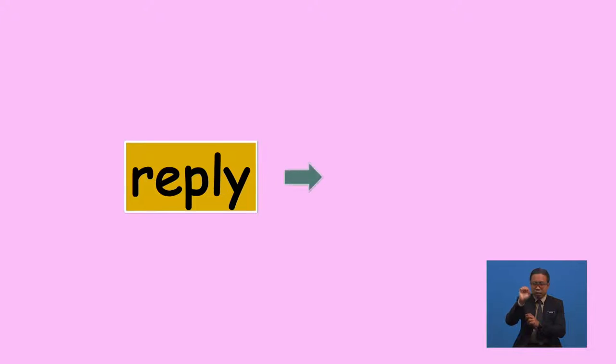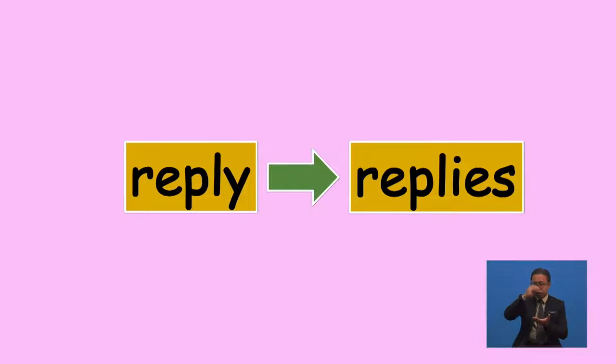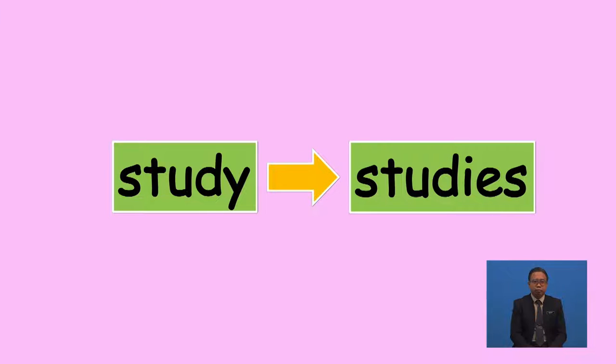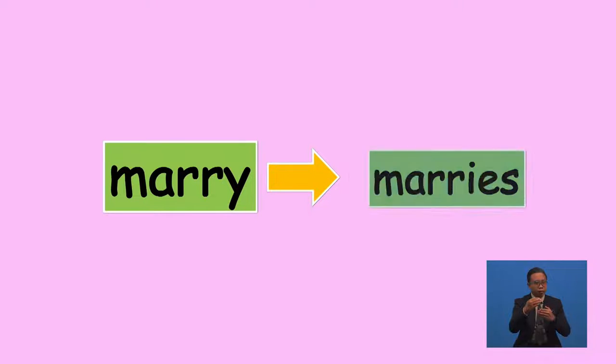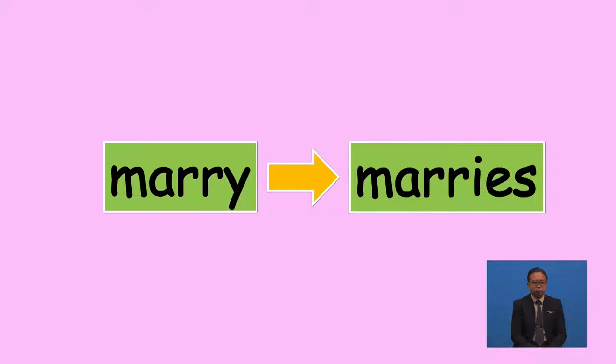Then some verbs that end with a consonant Y are a special case. We need to replace the Y with IES. For example, 'reply' changes to 'replies', 'study' to 'studies', and 'marry' to 'marries'.